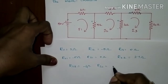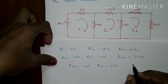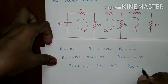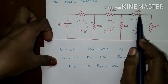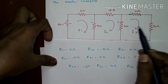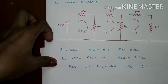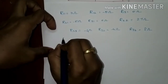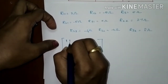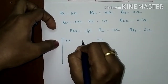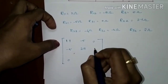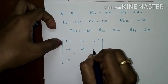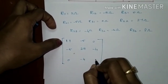By symmetry, R32 is also minus 4 ohms. R33 is the self-resistance of the third mesh. Note there is a 0-ohm element — do not add it; assume no resistance is connected there. So R33 is 4 plus 4, which is 8 ohms. The complete symmetric resistance matrix formed by KVL equations is: [11, −5, 0; −5, 27, −4; 0, −4, 8].